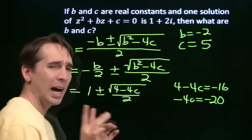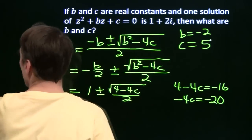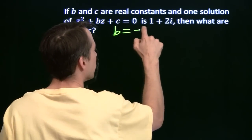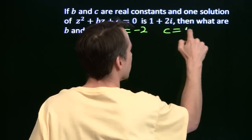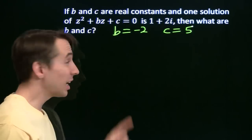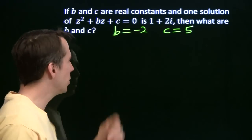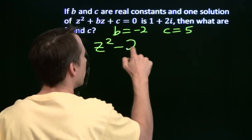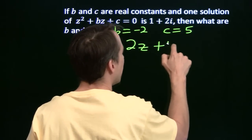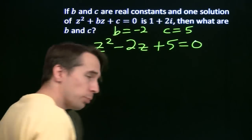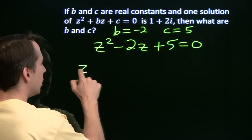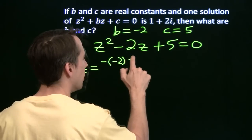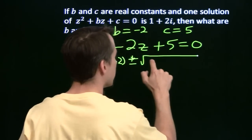It seems a little fishy to me, so I'm going to go ahead and check this by starting from the top with b is negative 2, c is 5, solving this quadratic and making sure that one of the roots comes out to be 1 plus 2i. So we have the quadratic z squared minus 2z plus 5 equals 0. Breaking out the quadratic formula, we get z equals negative of negative 2 plus or minus square root of negative 2 squared